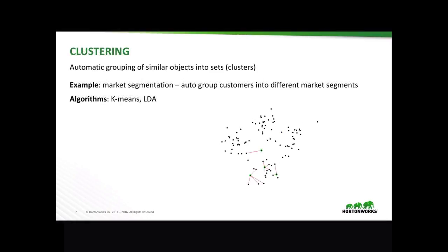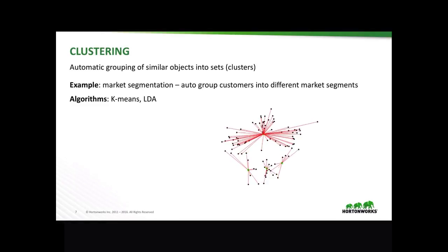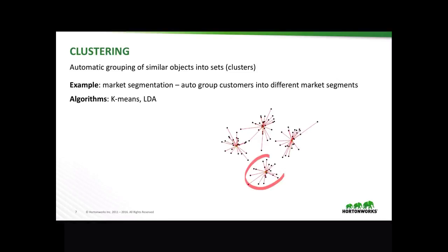Clustering is an automatic grouping of similar objects into sets or clusters and is useful as an initial step in data exploration. It could be used to perform market segmentation — basically grouping customers into different market segments — and popular algorithms are k-means and LDA. In the animated example, an external parameter also called a hyperparameter has been set to four clusters. The algorithm completes or converges when it finds the optimal cluster centers.